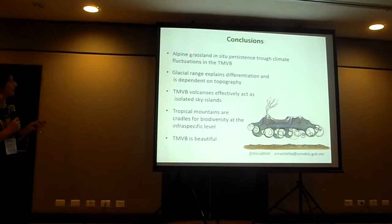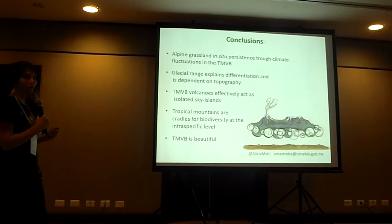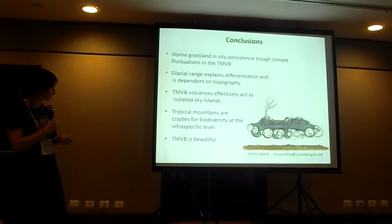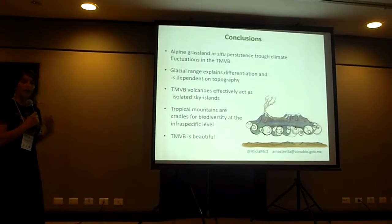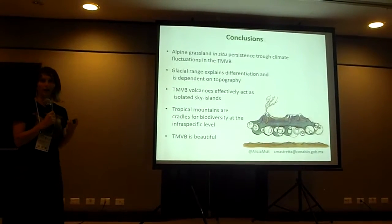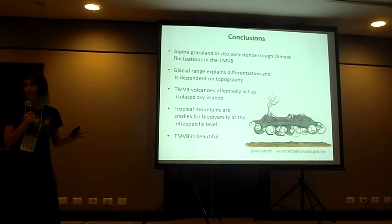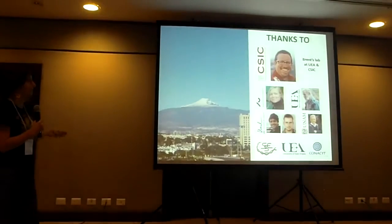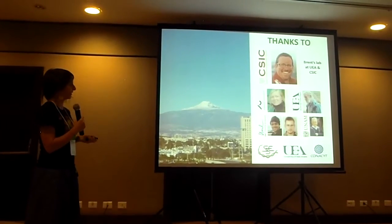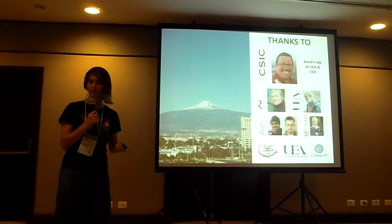To summarize: the alpine grasslands of the Mexican Volcanic Belt have been persisting in situ through climate change situations, and the glacial range of the inhabiting species best explains differentiation among populations. This means the Trans-Mexican volcanoes act as a system of isolated sky islands, confirming that tropical mountains are important for biodiversity also at the infraspecific level, not only at the species level. Finally, the Trans-Mexican Volcanic Belt is truly beautiful — and amazing. Thank you to the members of my PhD committee, Brent Emerson and his lab, and the Society for the Study of Evolution, whose Rosemary Grant Award made a real difference when starting this project.